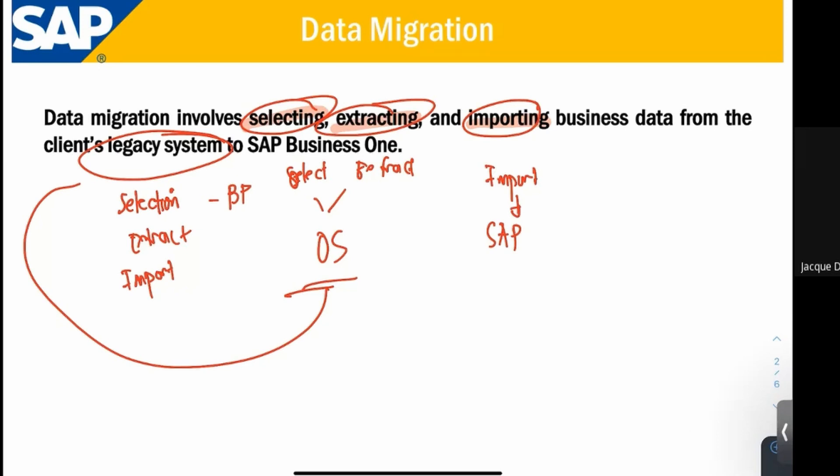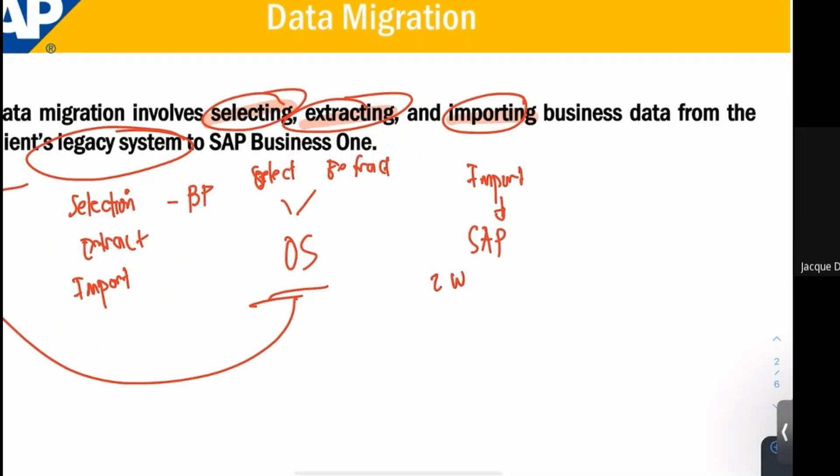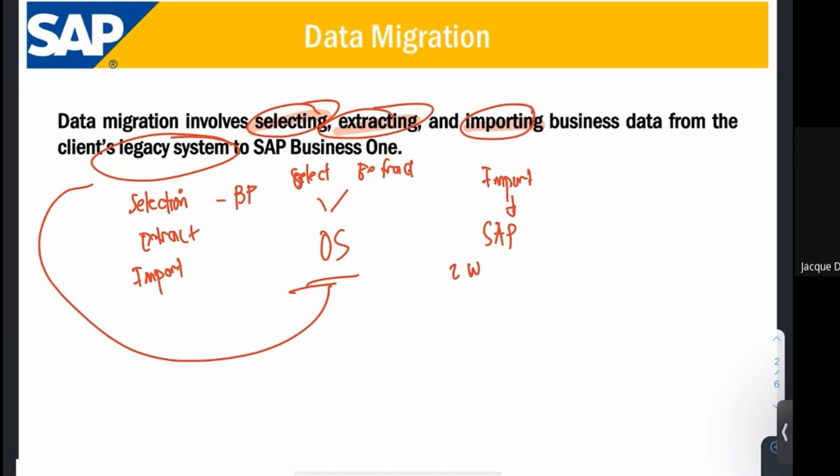After knowing the concept of data migration, the next question is how do we migrate the data from your old system to SAP Business One? There are two ways to import data from your old system to SAP Business One. The first one is import from Excel, and the second one is your Data Transfer Workbench. For this session, our main focus is importation from Excel — we will not talk about Data Transfer Workbench.